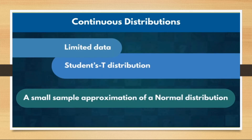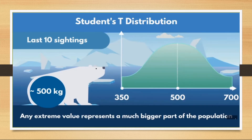Sometimes we cannot get data of the whole population and have to work with limited data, also called sample data. In such cases we use Student T-distribution. It can also be considered as a small sample approximation of normal distribution. For example, looking at the weight of the last 10 polar bears that were sighted. A lower sample size can result in a fatter tail — that is, the ratio of extreme values to values near the mean can be higher.